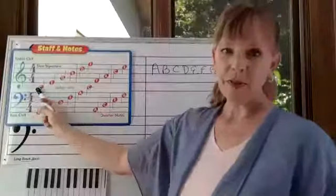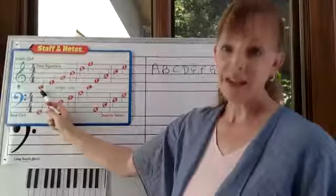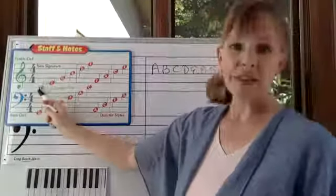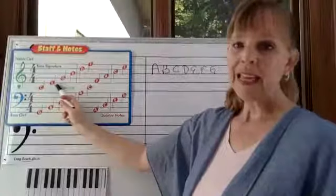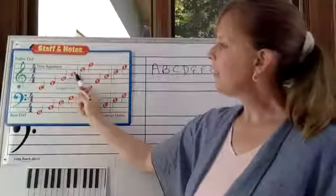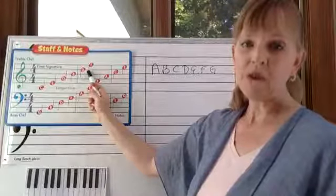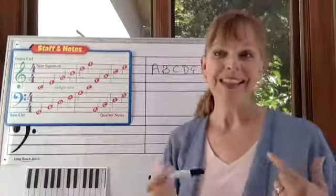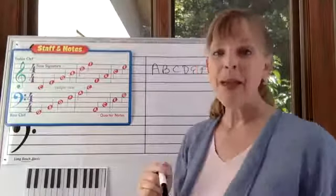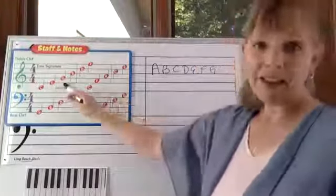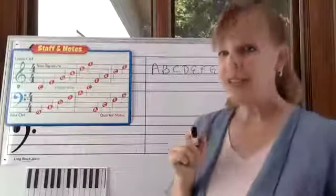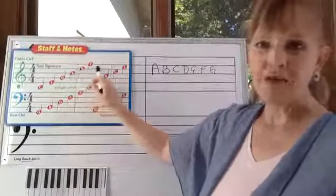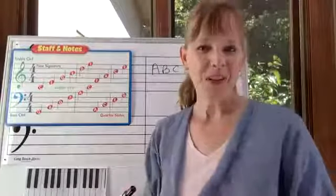If you look over here on this chart, you see that in the treble clef, for the line notes, C is below the staff. Remember, this is called the staff, and this is below the staff. E is the first line, G is the second line, B, third line, D, fourth line, and F is the fifth line. Now, what we usually do in music is use a mnemonic device to try to remember what the lines of the treble clef are. So here's an example of one that you can use: Every Good Boy Deserves Fudge.